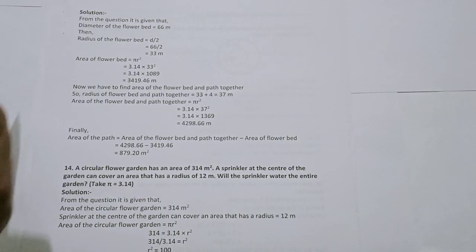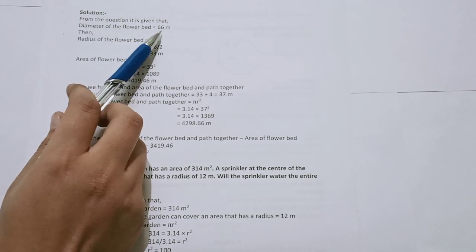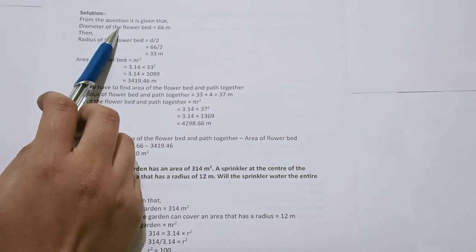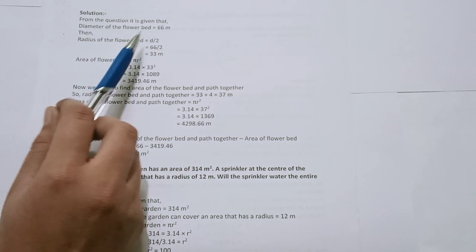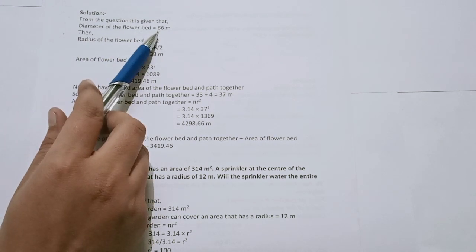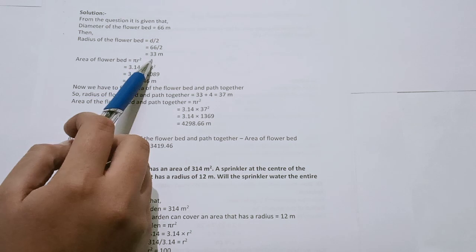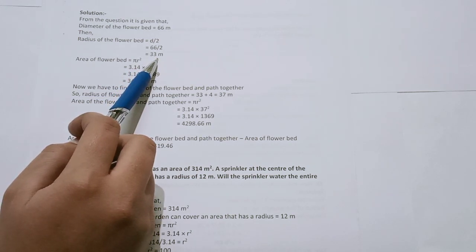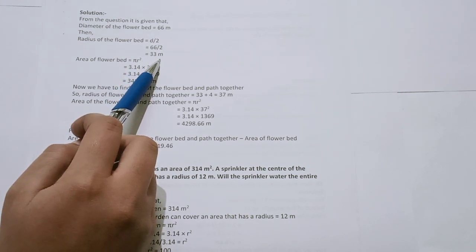We are given the diameter of the flower bed as 66 meters. Since the radius is half the diameter, the radius of the flower bed is 66 divided by 2, which equals 33 meters. So the radius of the flower bed is 33 meters.